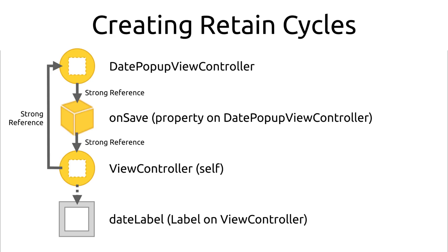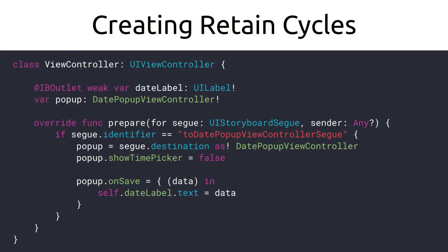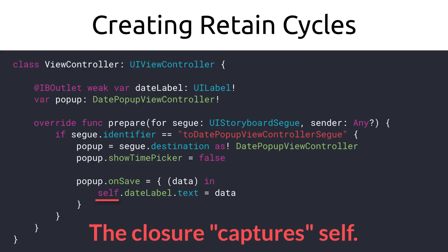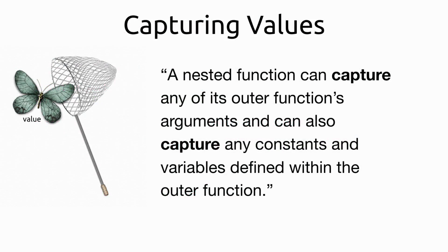So how are we going to fix this problem? If the closure is its own object, how come we didn't have to pass in 'self' as a parameter or as an argument like in a constructor the way other classes work? How is this view controller actually getting into the closure? The answer is what is known as capturing values. Let's try to understand this concept Swift calls capturing, because this is what's going to lead us to the solution to resolve the memory problem.